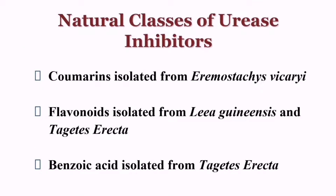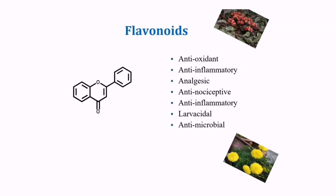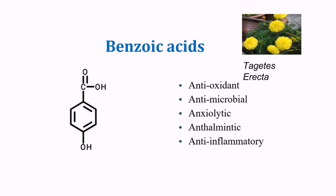These are the compounds from natural classes we have used as urease inhibitors, like coumarins, flavonoids, and benzoic acid. For natural compounds we use flavonoids and benzoic acids. The characteristics of benzoic acid include anti-inflammatory, antioxidant, and antimicrobial properties.